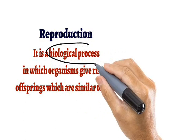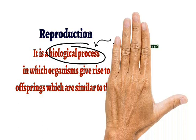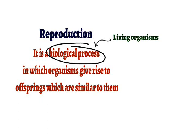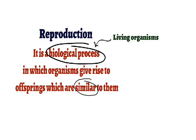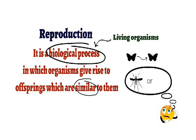Reproduction is a biological process because it is a property of living organisms, and this property is not shown by non-living things. At the end of the definition we stated that offsprings are similar to the parent — that is, offsprings are similar to the organisms that gave birth to them. For example, if a butterfly reproduces, the offspring will be a butterfly only, not a mosquito. We can easily identify them, and that is why offspring and parent are similar to each other.